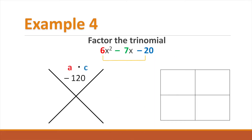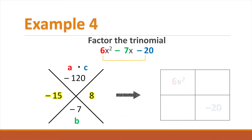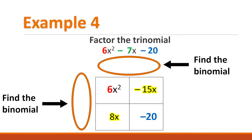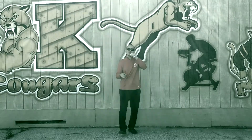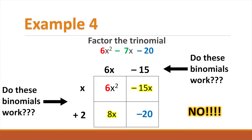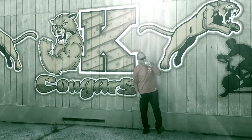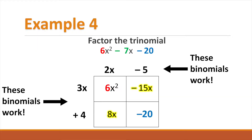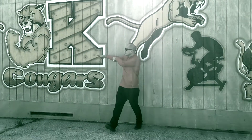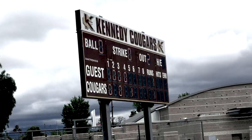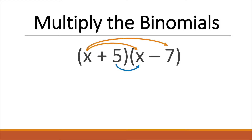Multiply the A times C again, put B on bottom. Fill your box up just like so, now you got an easy problem. Find the binomials on each side, use some guess and check. Try it once, try it twice, do it until you get it correct. Now that you got the solution, go and pat yourself on the back. This is how we Cougars do it — never give up, just bounce back.